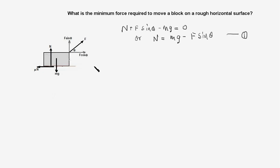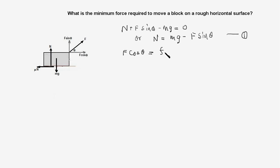When the block is about to move, the friction force reaches its maximum value. Therefore F cos theta equals mu times N. So F cos theta equals the maximum frictional force, which is mu times N. That is our equation number two.